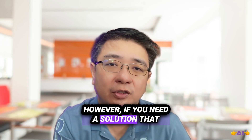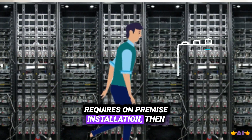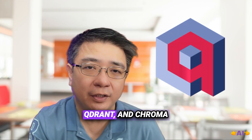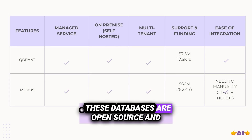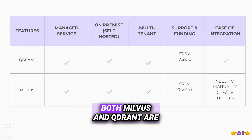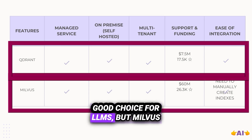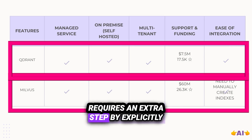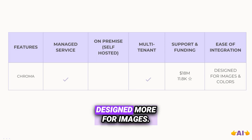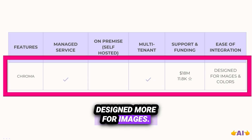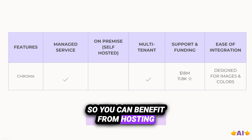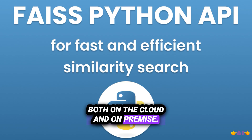If you need a solution that requires on-premise installation, then you need to evaluate alternatives including Milvus, Qdrant, and Chroma. These databases are open-source and can be installed on-premise. Both Milvus and Qdrant are good choices for LLMs, but Milvus requires an extra step of explicitly creating indexes. Chroma, on the other hand, is designed more for images. All of them provide managed servers so you can benefit from hosting both on the cloud and on-premise.